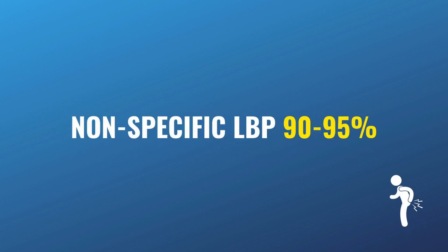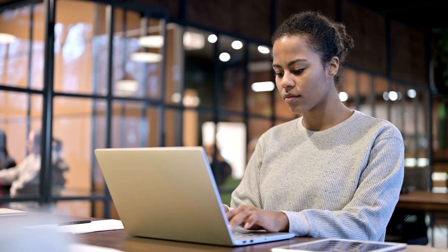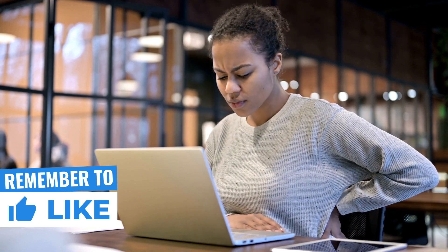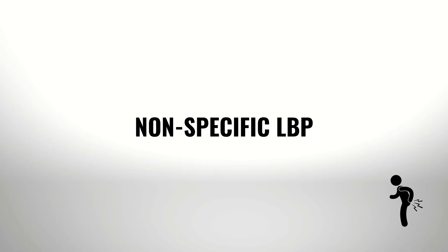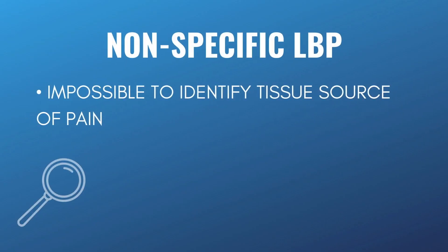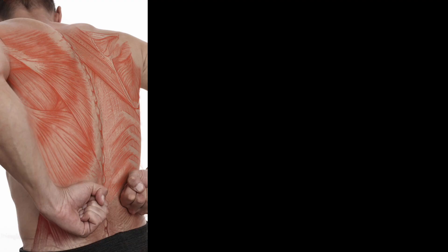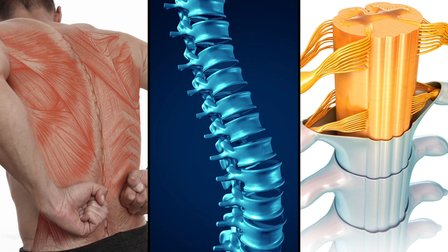The final group is non-specific lower back pain. They account for 90-95% of all cases. If the person's presentation does not resemble that of a serious pathology and nerve root involvement, they will be categorized as having non-specific lower back pain. We call it non-specific because at the tissue level, it is impossible to accurately identify the underlying cause. So whether the pain is caused by a particular muscle strain, joint, or nerve problem is completely unknown.